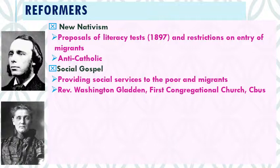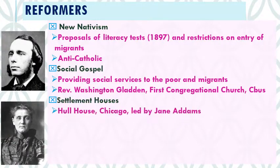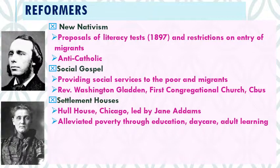Many of them served on local charity organizations to try to make the area better, cleaner, and safer. One group of reformers provided places for the poor and migrants called settlement houses. The most famous was Hull House in Chicago, led by Jane Addams, which offered education, daycare, adult learning, and tools to help people escape poverty. You could take classes in how to greet people in the American way, cooking, sanitation, home keeping, literacy, and citizenship — all designed to help the poor and migrants assimilate and be more successful in American society.